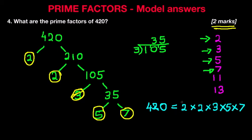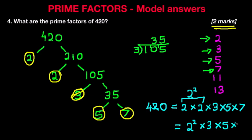The prime factors of 420 are 2 times 2 times 3 times 5 times 7. Now the 2 times 2 we can simplify to 2 to the power of 2. So to simplify it, we can write down 2 squared times 3 times 5 times 7. That is our answer. The prime factors of 420 are 2 squared times 3 times 5 times 7. If you show all of those workings out, you will get both marks.